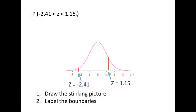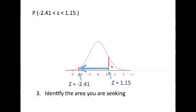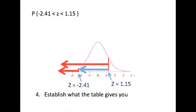For a problem with two boundaries, we draw the stinking picture and label both bounds: the lower bound at z equals negative 2.41 and the upper bound at z equals 1.15. We identify the area we're looking for — the region between these two boundaries. The table gives us all area to the left of each z-score. So look at the picture and see if you can come up with a plan to trap that middle area using these two values.